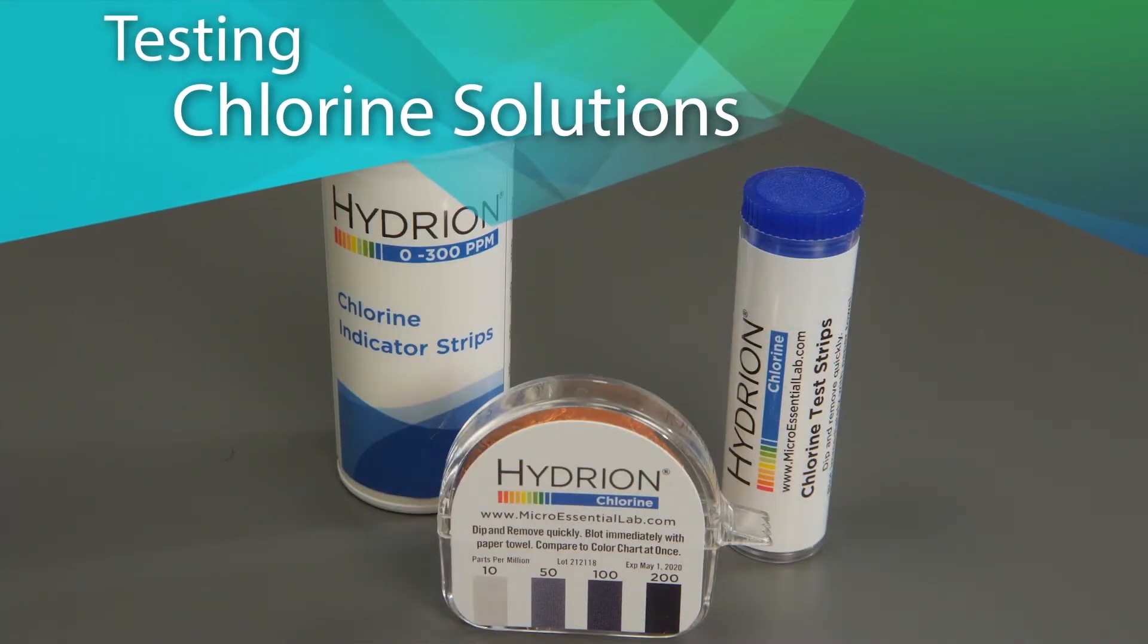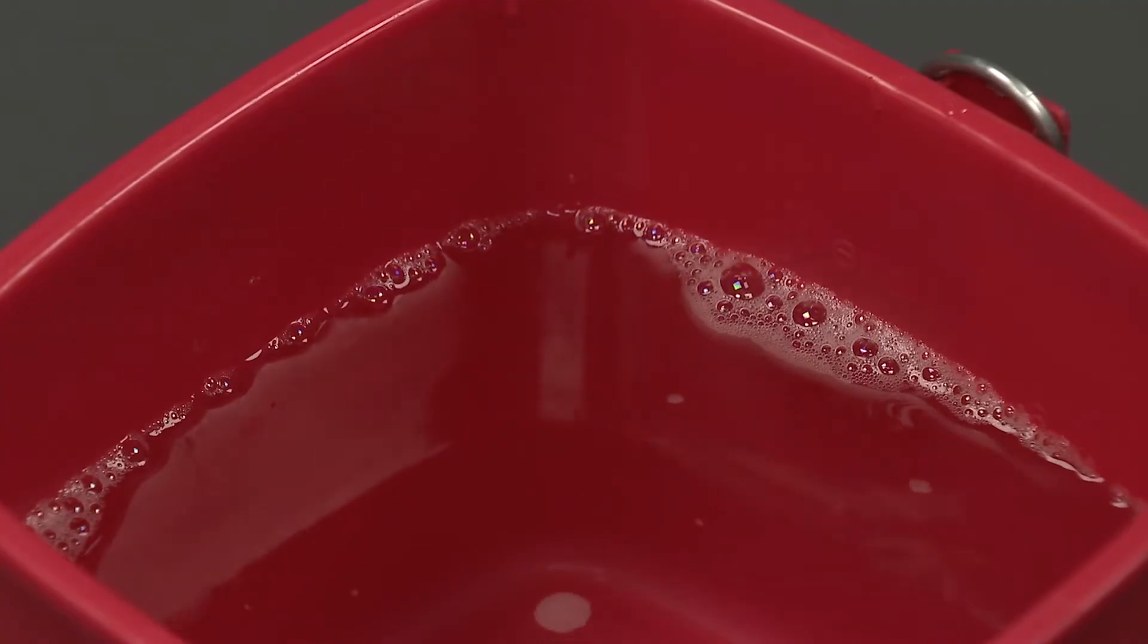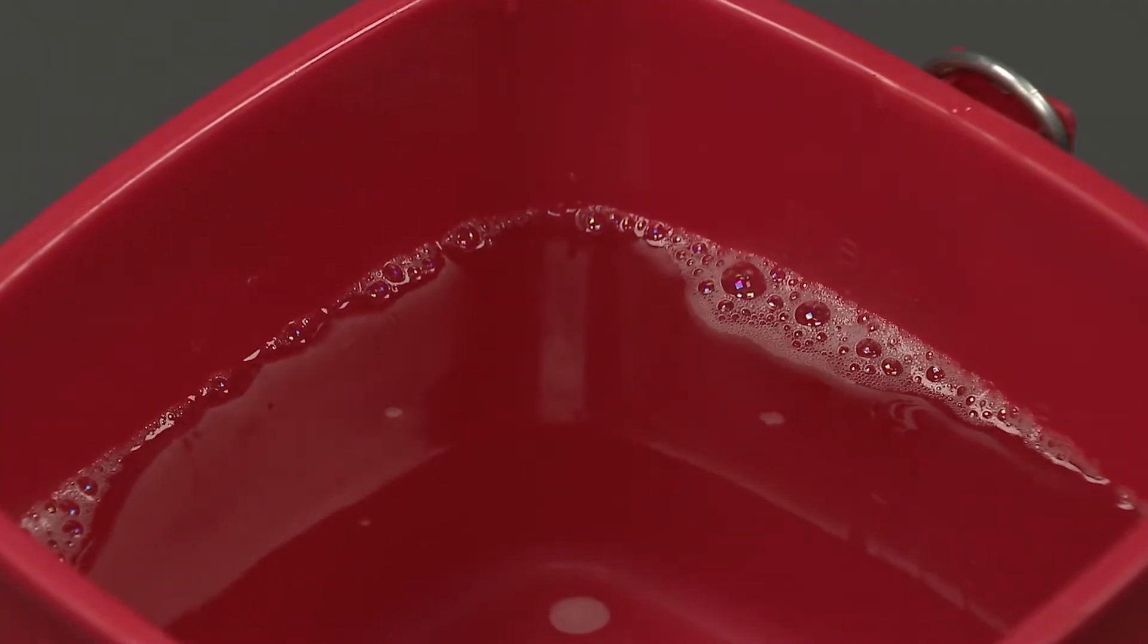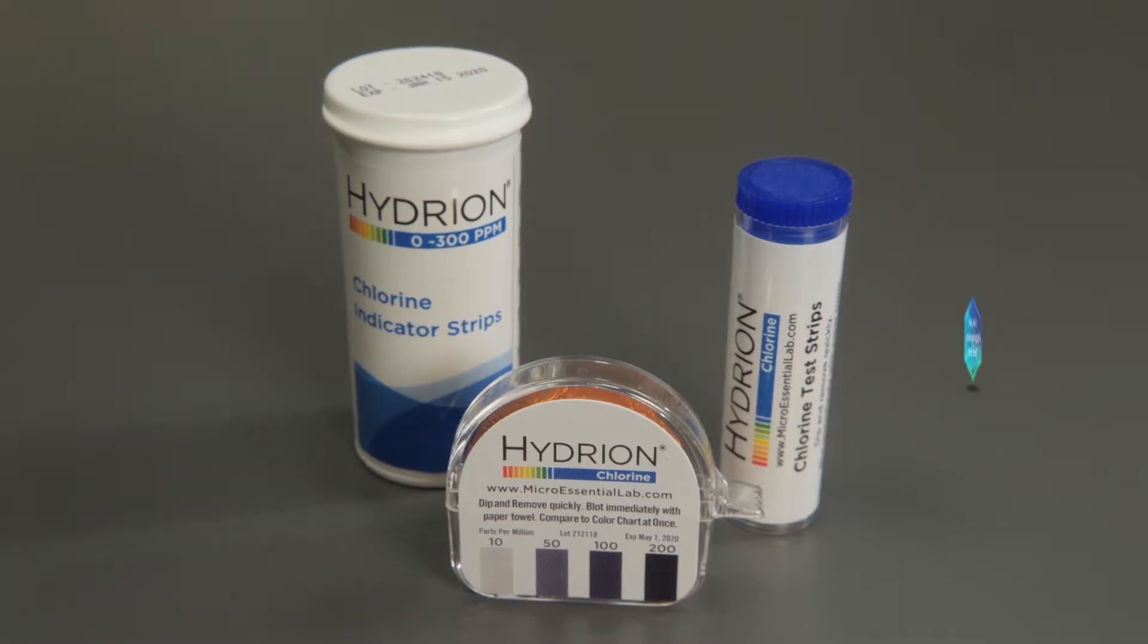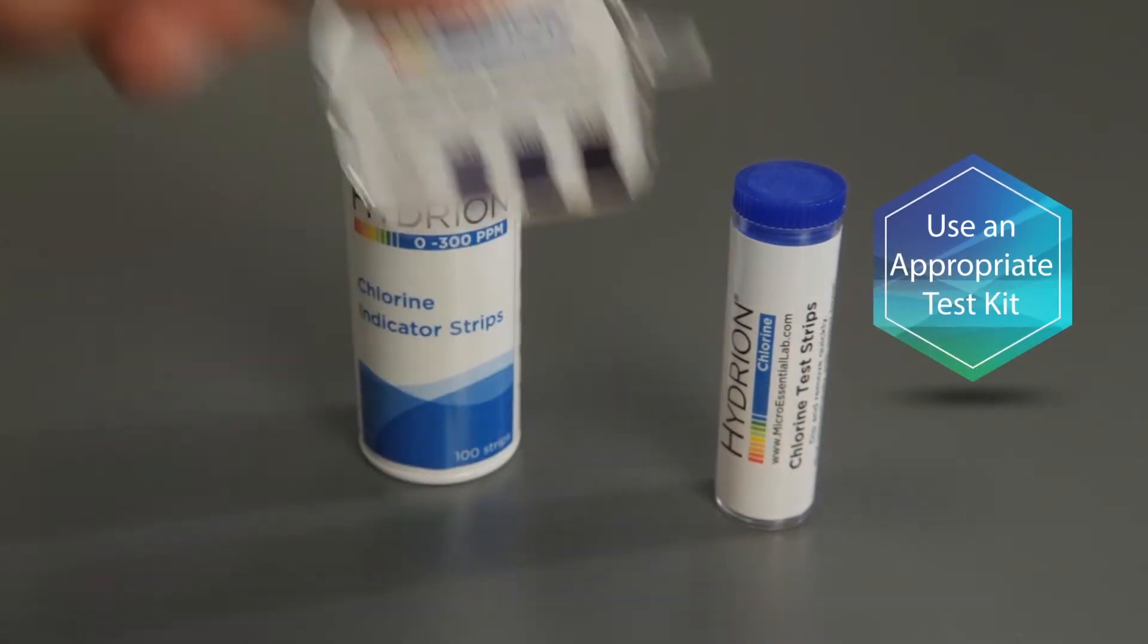Testing Chlorine Solutions. Prepare the chlorine solution according to the manufacturer's instructions. When testing the accuracy of its dilution, use an appropriate test kit like CM240.